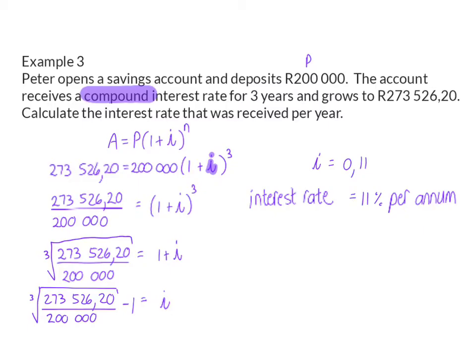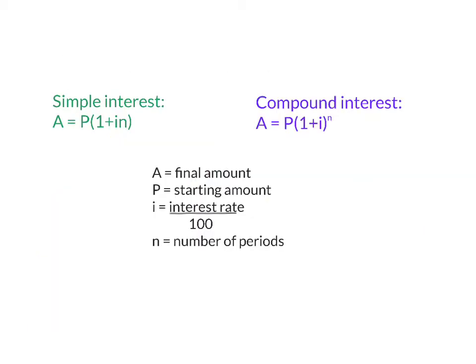So to sum up, we had a look at simple as well as compound interest, and each of these have their own formula. Each formula has four variables, and you need to determine which three variables were given so that you can use algebra to solve the fourth variable.